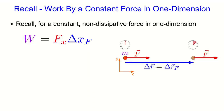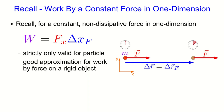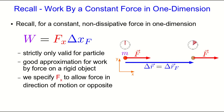Remember that for a constant non-dissipative force acting on a particle in one dimension, the work was just the product of the x component of the force and the x component of the displacement vector. This is strictly only valid for a force acting on a particle, but it's a good approximation for the work by a force on a rigid object. We're specifying f_x and delta x_f as vector components, and in this case the vectors are parallel, so those components are either positive or negative.